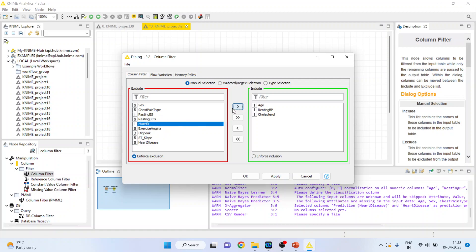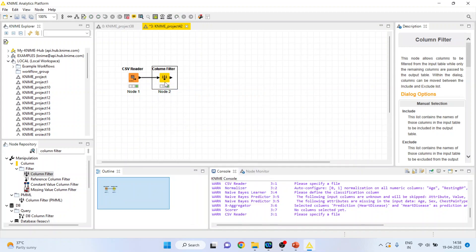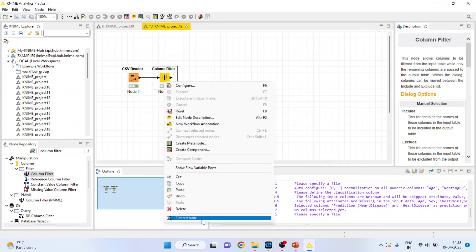Maximum hours of exercise and heart disease. Click ok. Right click on it and execute. Again right click on it and you can see the filter table.